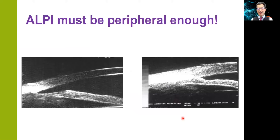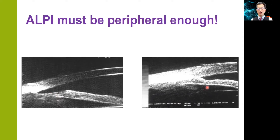By far, I think the most common reason why iridoplasty sometimes does not work is because it is not applied peripherally enough. On the left-hand side here, you can see that the laser is very well placed in the far periphery of the iris, there is good iris stromal contraction and thinning, and so the angle is reopened. But on the right-hand side, the laser spot is applied too centrally, so even with the iris stromal contraction, there is no opening of the drainage angle.